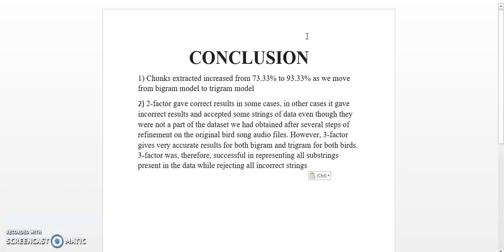Coming to the conclusion: our first conclusion is that the chunks extracted increased from nearly 74% to 94% as we move from the bigram model to the trigram model. Our next conclusion is that the 3-factor gave correct results compared to the 2-factor — the 2-factor sometimes gave incorrect results and accepted some strings of data even though they were not part of the data. Hence, 3-factor gave more accurate results. Thank you for watching this video.